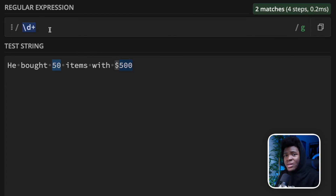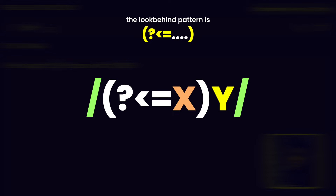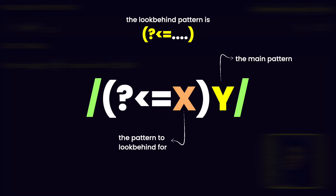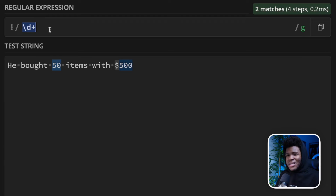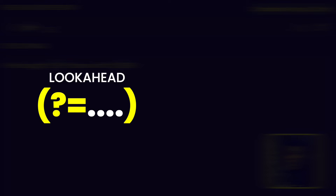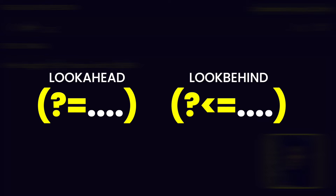What's the syntax of a look-behind pattern? You have open parentheses, question mark, followed by the less-than symbol, then the equal symbol, then your look-behind pattern, then close parentheses, followed by the pattern you actually want to match. If you remember the look-ahead syntax, inside the parentheses you have question mark and equal. With look-behinds, you add the less-than symbol before the equal.